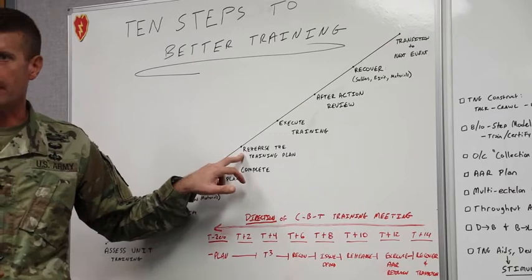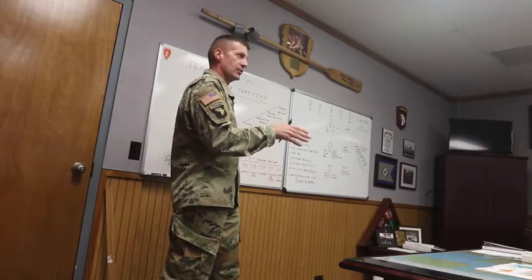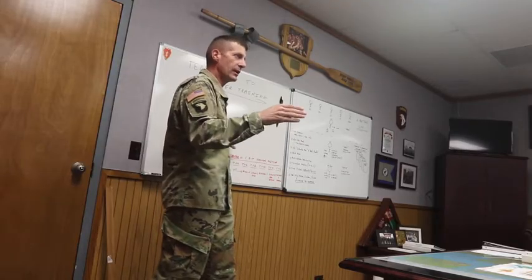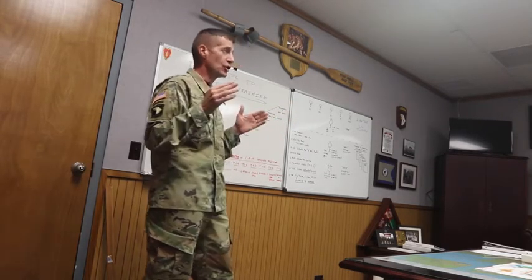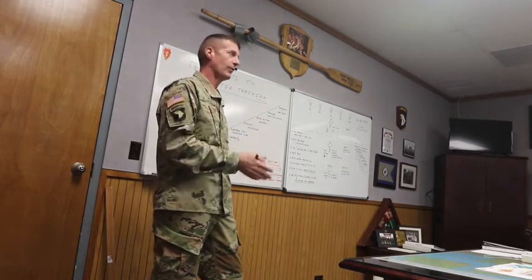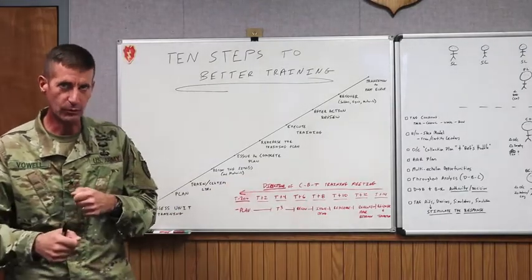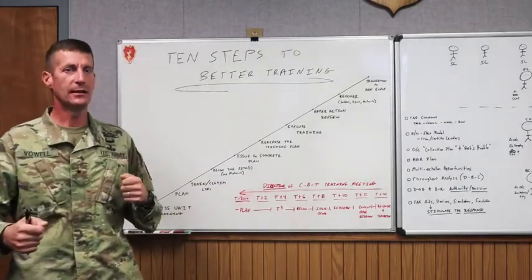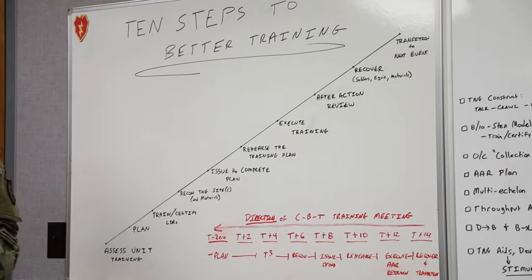Next, we want to rehearse the training plan. Specific techniques include tactical exercise without troops, lane walking on ranges, conducting map exercises, and making sure instructors rehearse their material — whether in a classroom or range environment. We've gone through the murder board; somebody has checked that that leader and unit is ready to conduct the training. We've rehearsed what we're going to do.